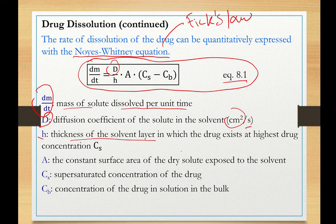h is the thickness of the solvent layer in which the drug exists at highest drug concentration, supersaturated concentration Cs. A is the constant surface area of the dry solute exposed to the solvent, expressed usually in units of centimeters squared. We have already described the supersaturated concentration and the bulk concentration.